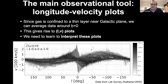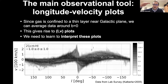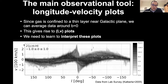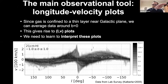The main tool is longitude-velocity plots. Because gas is confined to a thin layer near the galactic plane, it's convenient to average it around B equals zero, which is the galactic plane. This removes one dimension and you are left with these LP plots. Here I show an example for atomic hydrogen. The galactic center is in the middle, and the grayscale gives you how much gas there is at each point along the disk. As you move horizontally, you move along the disk of the Milky Way; vertically it's the line-of-sight velocity.